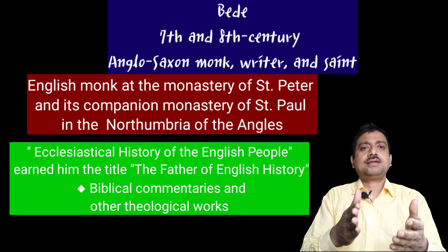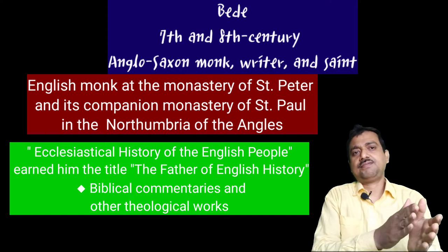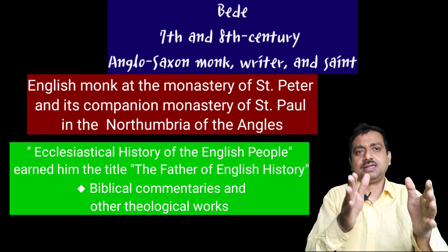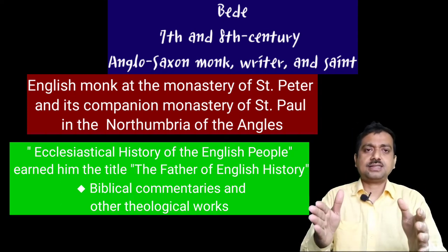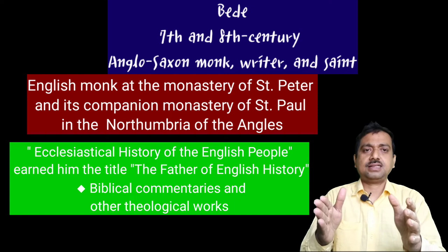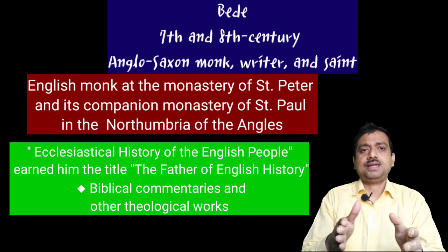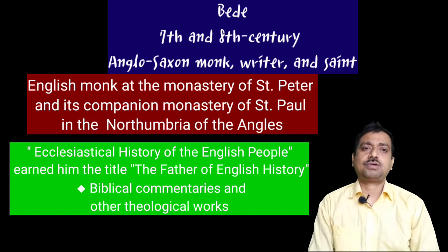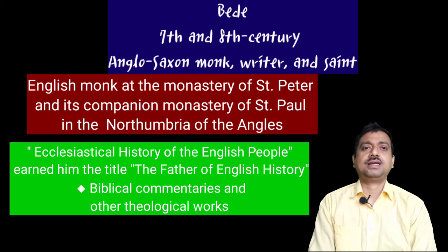The important Latin writer Bede lived from 673 to 735. This is important when understanding Old English because most of the religious, ethical, and legal writing came from Bede, though it was written in original Latin text. His works were translated into Old English by Alfred the King.